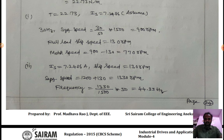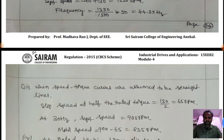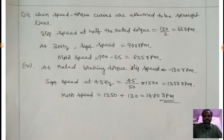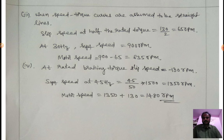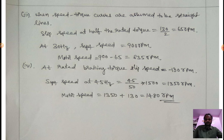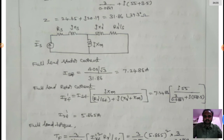For part two, frequency is 54.33 Hz. Since speed-torque curves are assumed to be straight lines, slip speed at half of rated torque = 130/2 = 65 rpm. At 30 Hz, synchronous speed = 900 rpm, so motor speed = 900 − 65 = 835 rpm. For part four, at rated braking torque slip speed = −130 rpm. At 45 Hz, synchronous speed = 1350 rpm, so motor speed = 1350 + 130 = 1480 rpm.